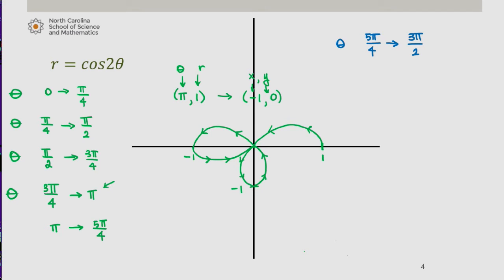You don't have to do it this way, but this is one approach. Between 5 pi over 4 and 3 pi over 2, let's take a look at what r would be. We range between 0, so cosine of 2 times 5 pi over 4 would give me cosine of 5 pi over 2, which is 0.